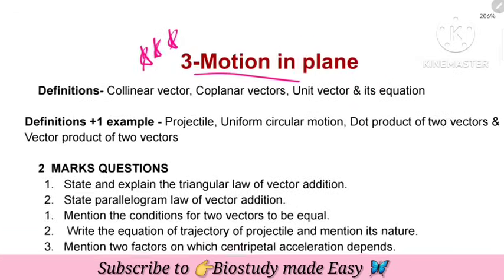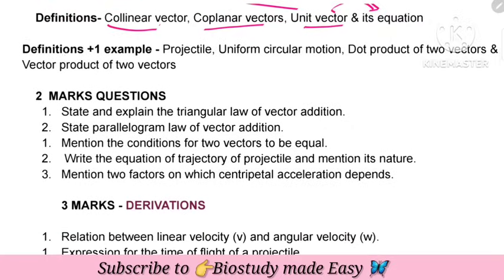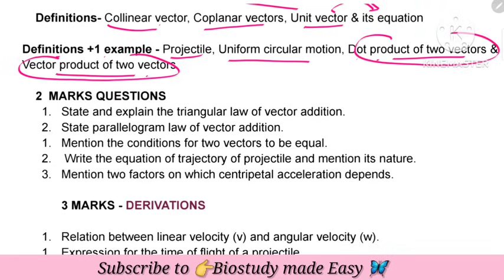Definitions for MCQs: collinear vector, coplanar vector, unit vector. Definition plus one example for: projectile, uniform circular motion, dot product of two vectors, and vector product of two vectors — these are very important.